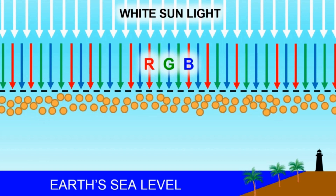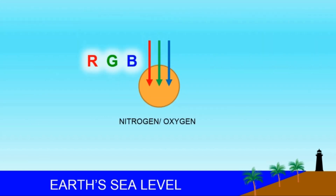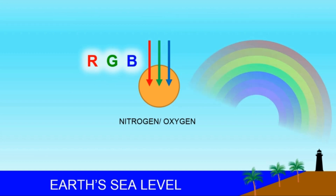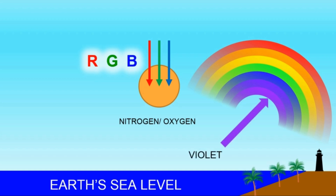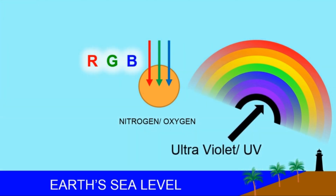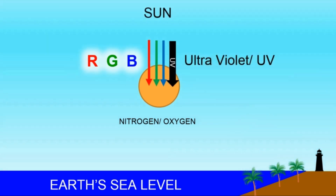Let's show the nitrogen and oxygen molecules as these orange circles. When these rays hit the nitrogen or oxygen molecule, something magical occurs. You've seen a rainbow — it ends in the color violet. Right after that comes ultraviolet, or UV, shown in black, which the human eye cannot see. So UV comes along in sunlight with RGB.